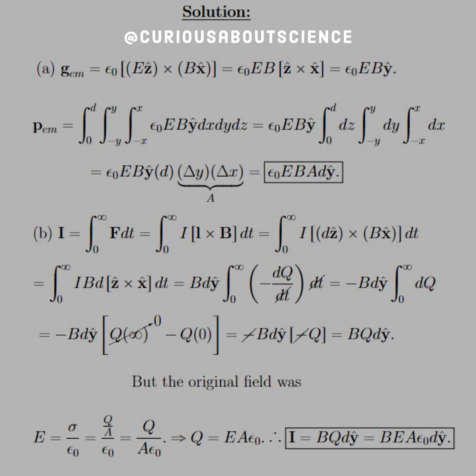Push that through, you get ẑ × x̂, which comes back to ŷ. B and d are constants, so we push them outside the integral.